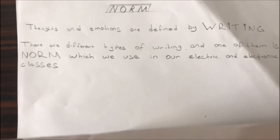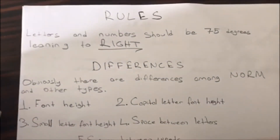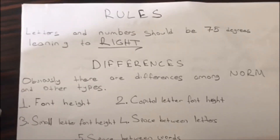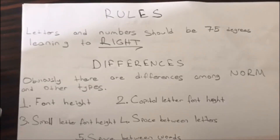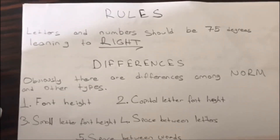Thoughts and emotions are defined by writing. There are different types of writing and one of them is norm, which we use in our electric and electronic rules. Actually, there's only one golden rule about norm, which is letters and numbers should be 75 degrees leaning to the right. It's the only rule.